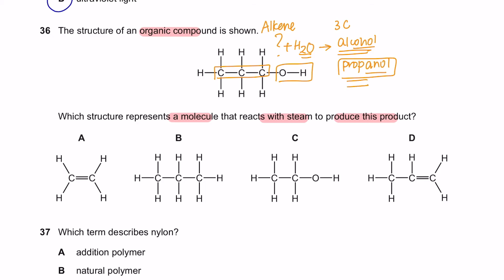Since the alcohol is propanol, a 3 carbon alcohol, it means that it will also be a 3 carbon alkene. This here has double bonds so it's an alkene and it has 3 carbons. So the answer is D.